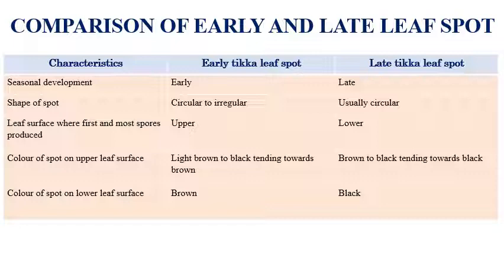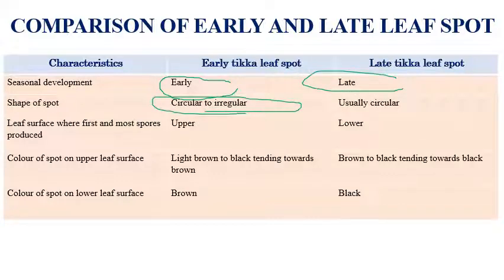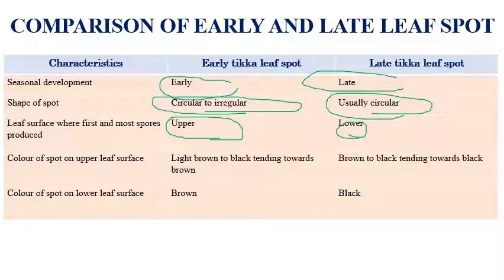Comparing Early and Late Tikka: Early Tikka occurs in early season while Late Tikka occurs in late season. Spots in Early Tikka are circular to irregular, while Late Tikka spots are usually circular. Spore formation in Early Tikka is on the upper surface, while in Late Tikka it is on the lower surface. Upper surface spot color is light brown to black in Early Tikka and brown to black in Late Tikka. Lower surface spots are brown in Early Tikka and black in Late Tikka. Early Tikka is more dangerous because it occurs early and has a greater impact on yield.